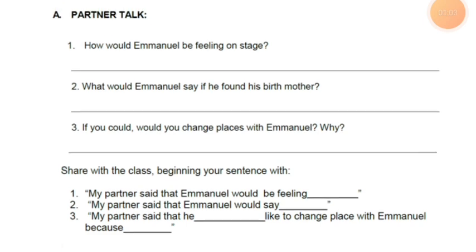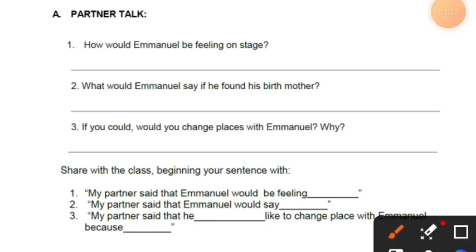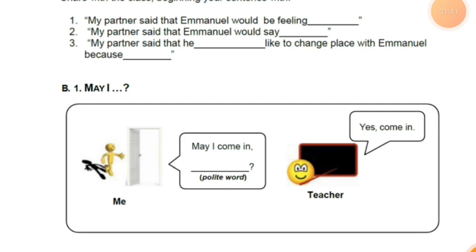For example, the first question: how would Immanuel be feeling on stage? Immanuel is feeling very good and very excited — you have to write like this. The second question: what would Immanuel say if he found his birth mother? The third question: if you could, would you change places with Immanuel? Why?